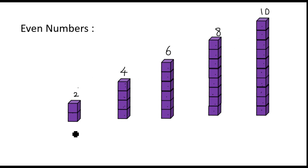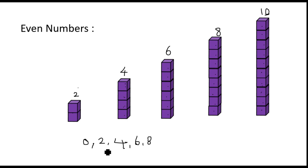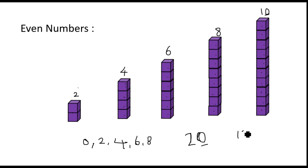So the numbers two, four, six, eight, ten are even numbers. Numbers ending with zero, two, four, six, or eight are called even numbers. This is the easiest way to remember even and odd numbers. For example, twenty ends with zero, so it is an even number. Eighteen ends with eight, so it is also an even number.